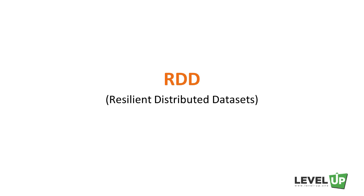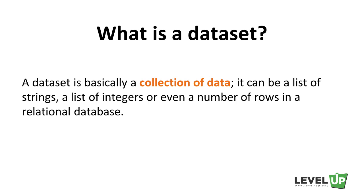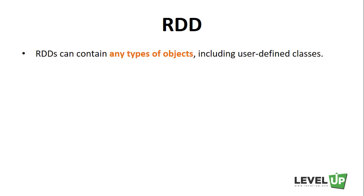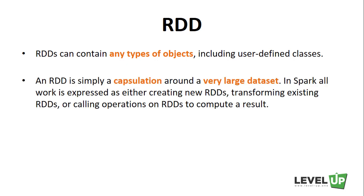RDD stands for Resilient Distributed Datasets. A dataset is basically a collection of data. It can be a list of strings, a list of integers, or even a number of rows in a relational database. RDDs can contain any types of objects, including user-defined classes. An RDD is simply an encapsulation around a very large dataset.